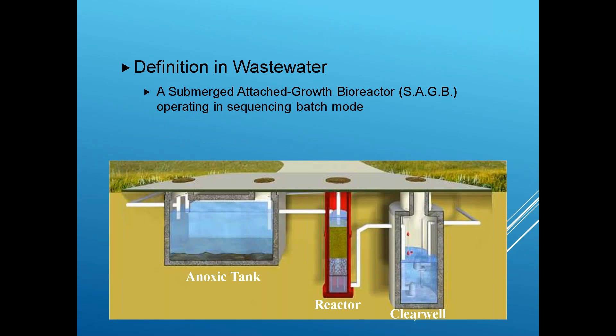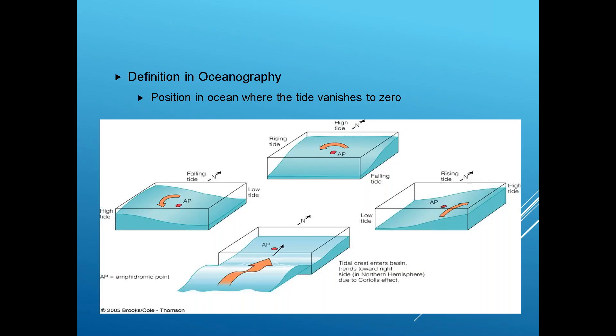This is a SAGBI system — the reactor in the middle is an amphidrome reactor, where water is filtered through the media and then into the clear well. As a side note, amphidrome is not a made-up term — it's actually an oceanography definition where the tide vanishes to zero, and it relates to how the amphidrome process is handled with our returns.